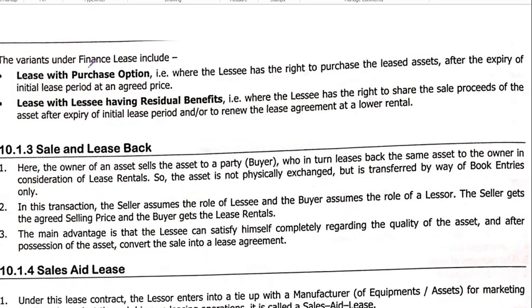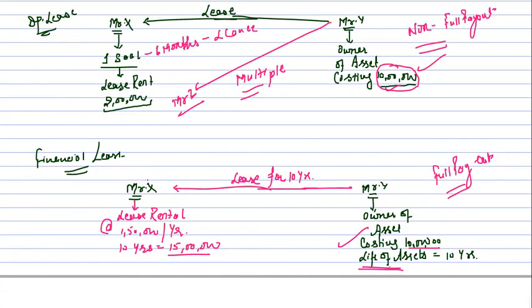Now the variants of financial lease — there are 2 variants. First: lease with purchase option. After the 10-year lease expires, Mr. X has to return the asset to Mr. Y. But Mr. X tells Mr. Y: since your money of 10 lakh has been recovered, sell me the asset — I will buy it and become the owner. Mr. X's strategy is that since the asset is still running well after 10 years, he wants ownership transferred to himself.